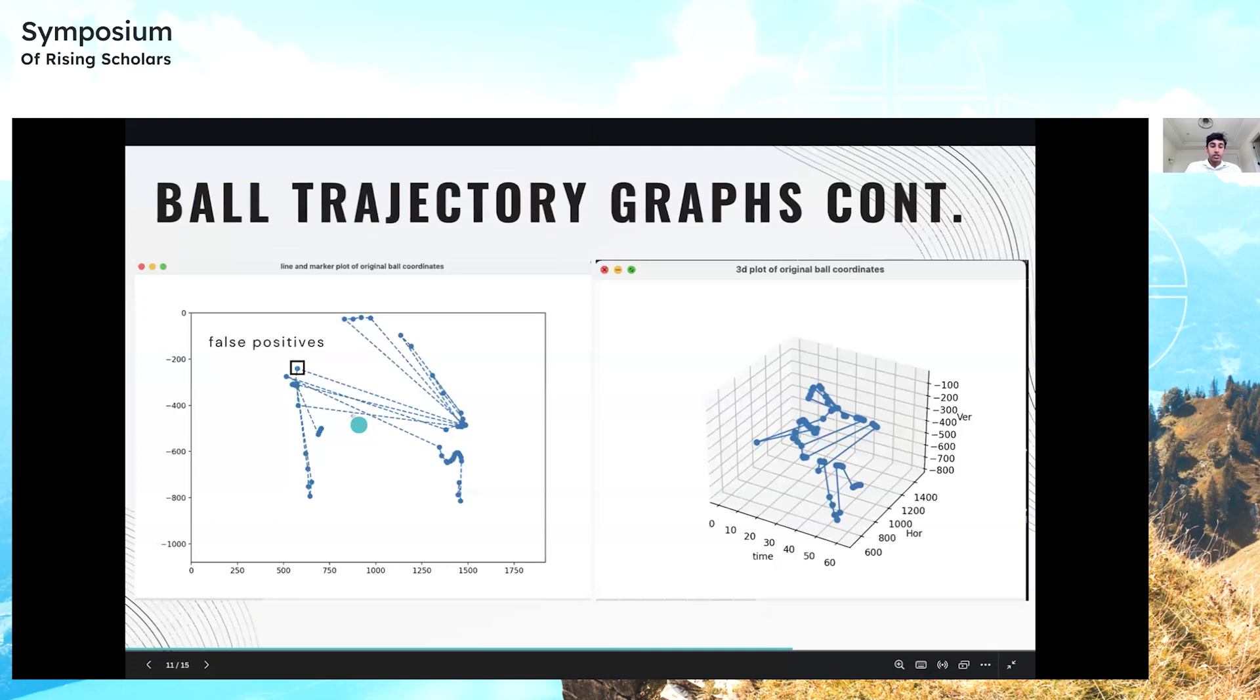For example, over here, this is taking something else as the ball where the ball is actually here. Luckily, the time aspect draws the line between each point, which shows that this is indeed a false positive and should not be there.